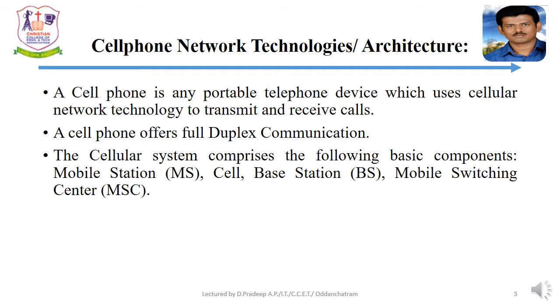The basic components of cellular systems are: mobile station, cell, base station, and mobile switching center.